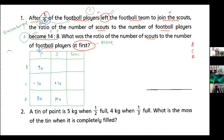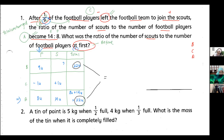Now for the total, I add the after row: eight units plus 14 units equals 22 units. Total unchanged concept means the total before and the total after are the same. So the total before is also 22 units. To find scouts before: nine units plus scouts equals 22 units.